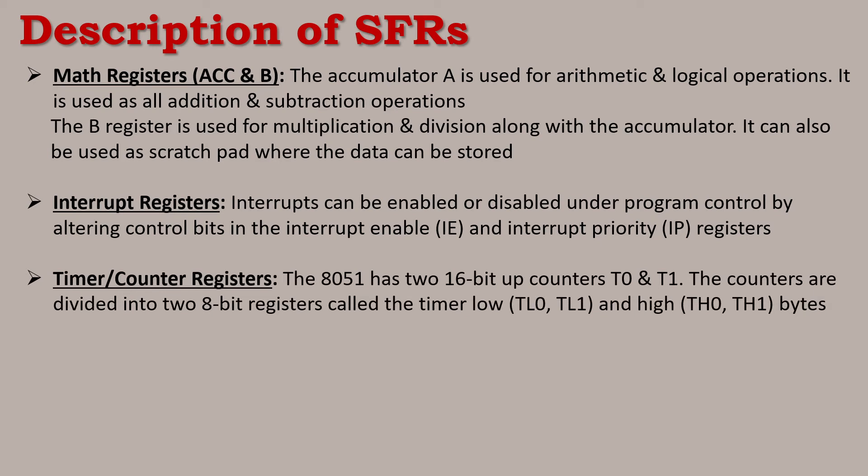Timer counter registers: the 8051 has 16-bit timers T0 and T1. Both timers are split into 8-bit registers, giving 4 registers total. TL0 and TL1 are the lower 8-bit registers for timer 0 and timer 1 respectively. TH0 and TH1 are the higher 8-bit registers. So each 16-bit timer register is divided into two 8-bit registers.